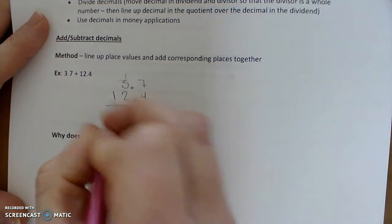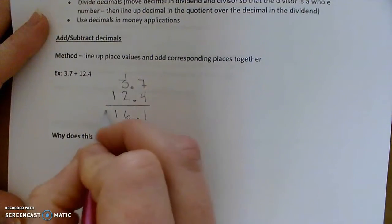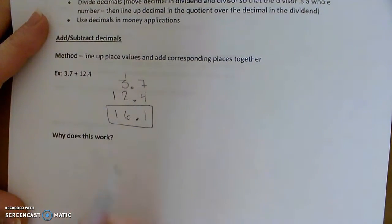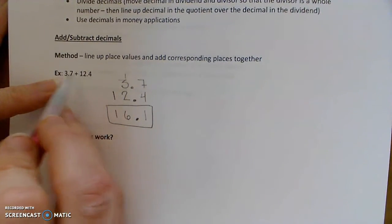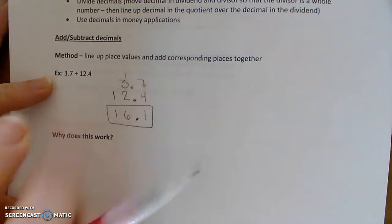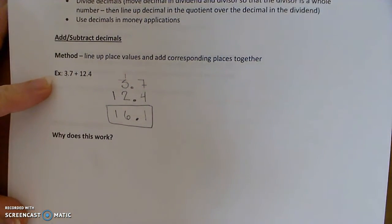3 plus 2 plus 1 is 6, and 1 plus 0 is 6. So we get 16.1, which should make sense if we estimate this is approximately 12, and this is close to 4. 12 plus 4 is 16, so it's approximately correct.